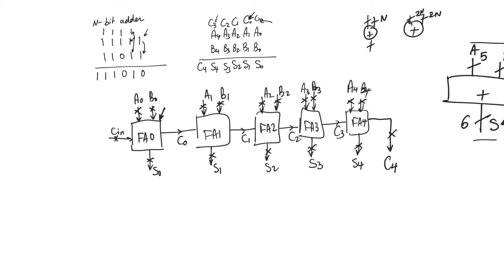And so, sum S0 is going to be ready after a time TS, and this carry C0 is going to be ready after a time TC. TS and TC can be estimated using CMOS gate delay, as we did in the previous video. So, C0 is ready at TC. When is S1 ready? And when is C1 ready?